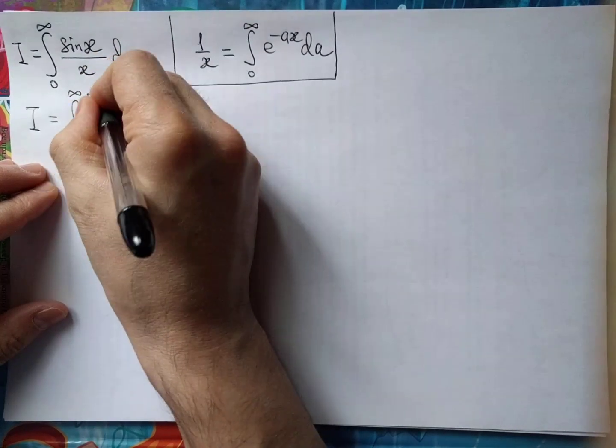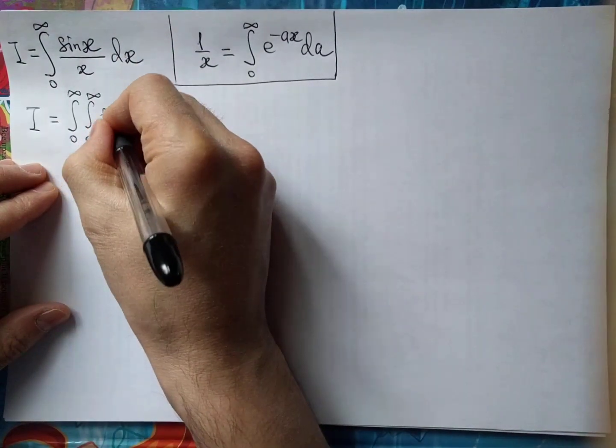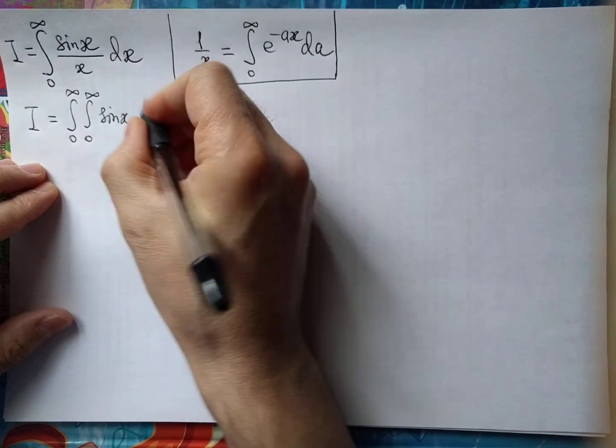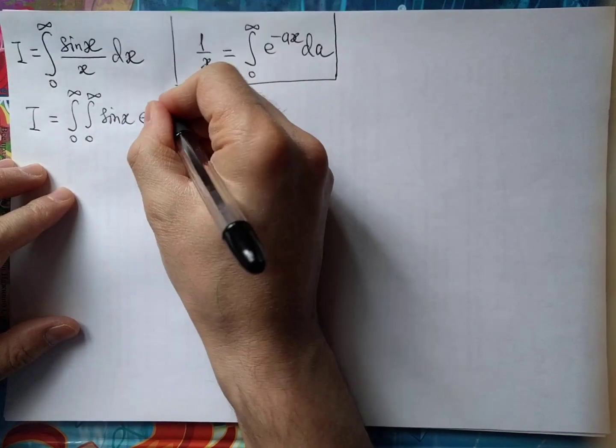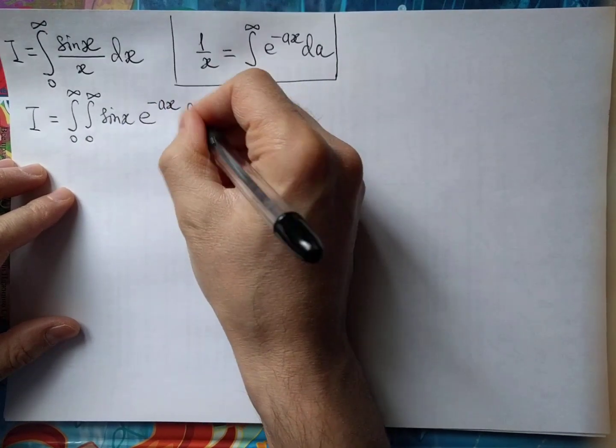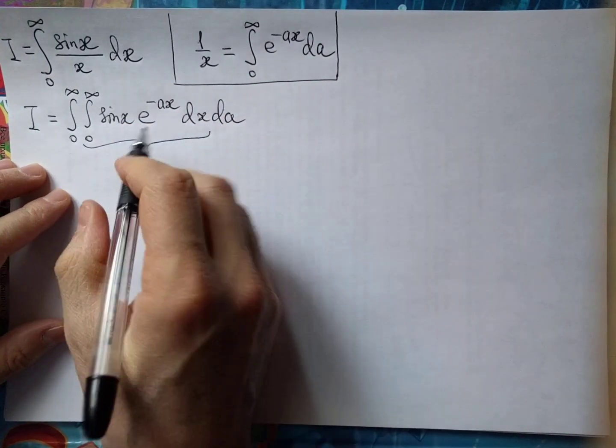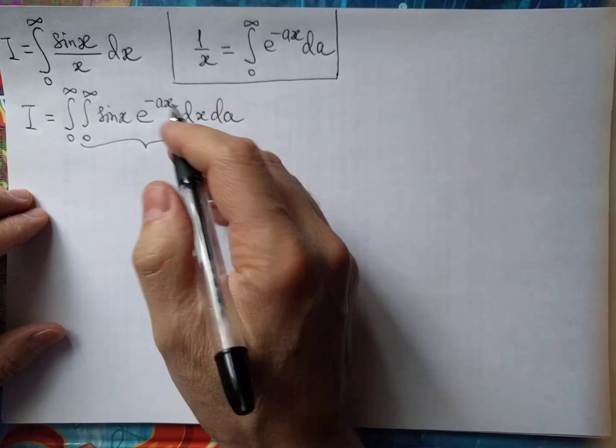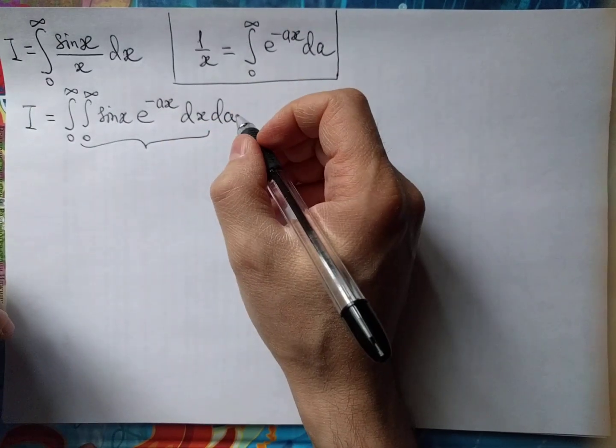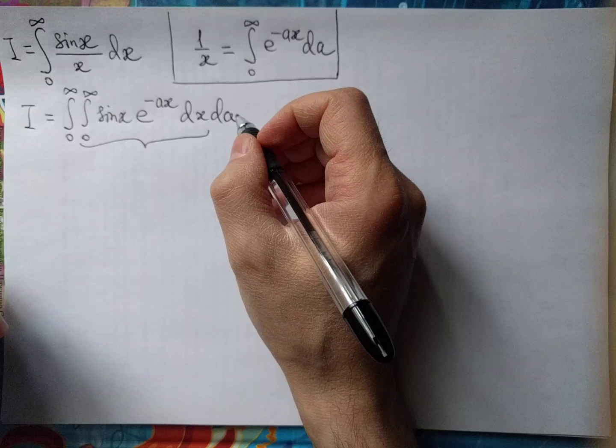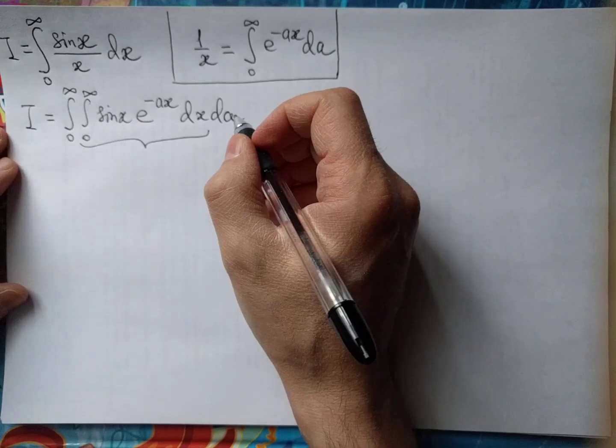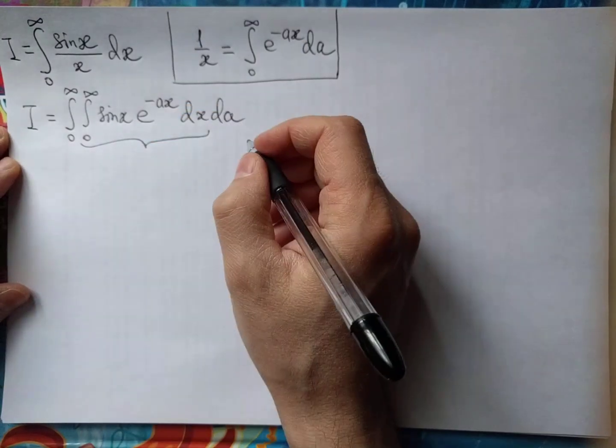It will be a double integral sine of x exp dx da, and now let's focus on this integral. There is a theorem in calculus that permits swapping the order of integration, and this is the case it works.